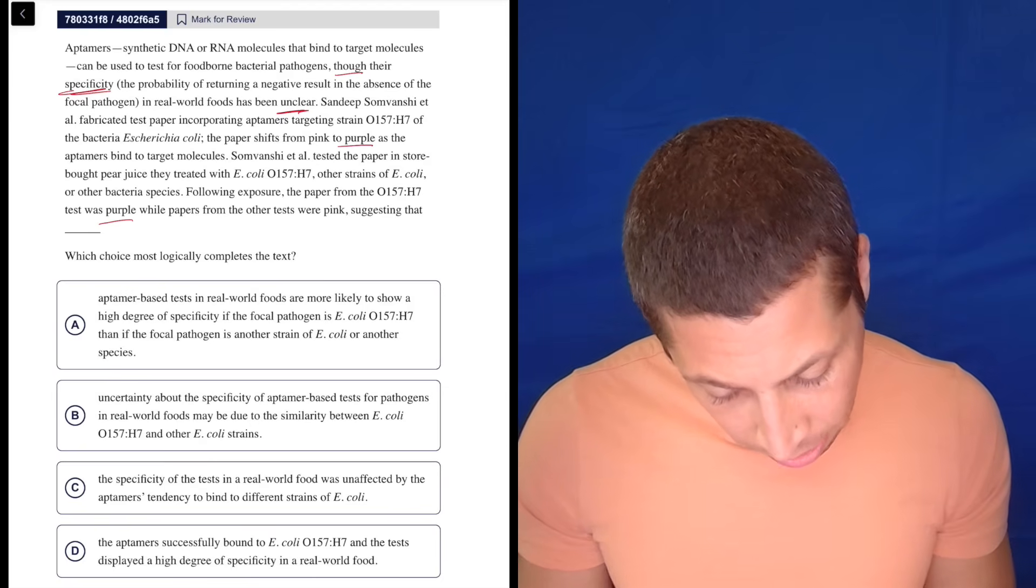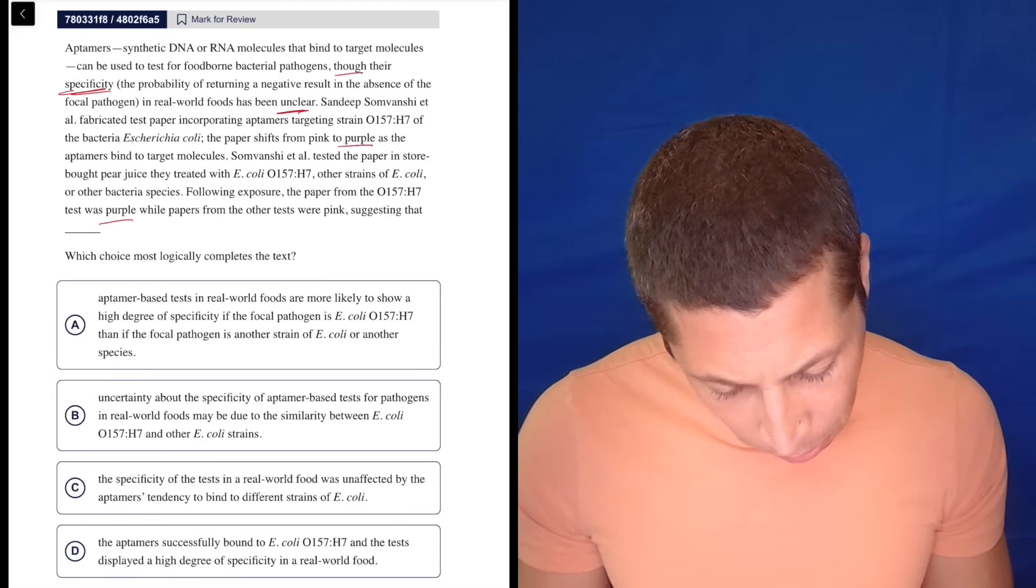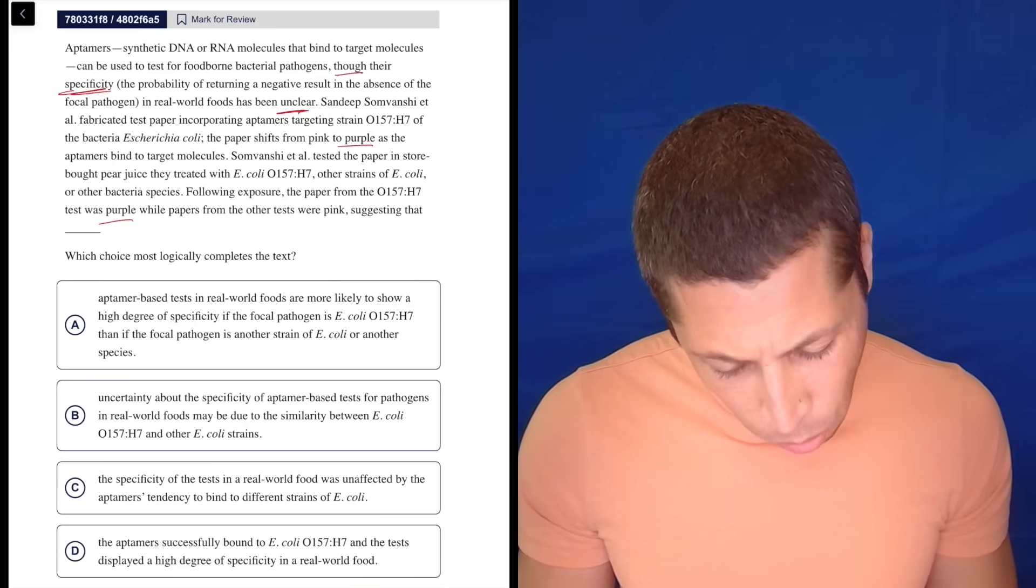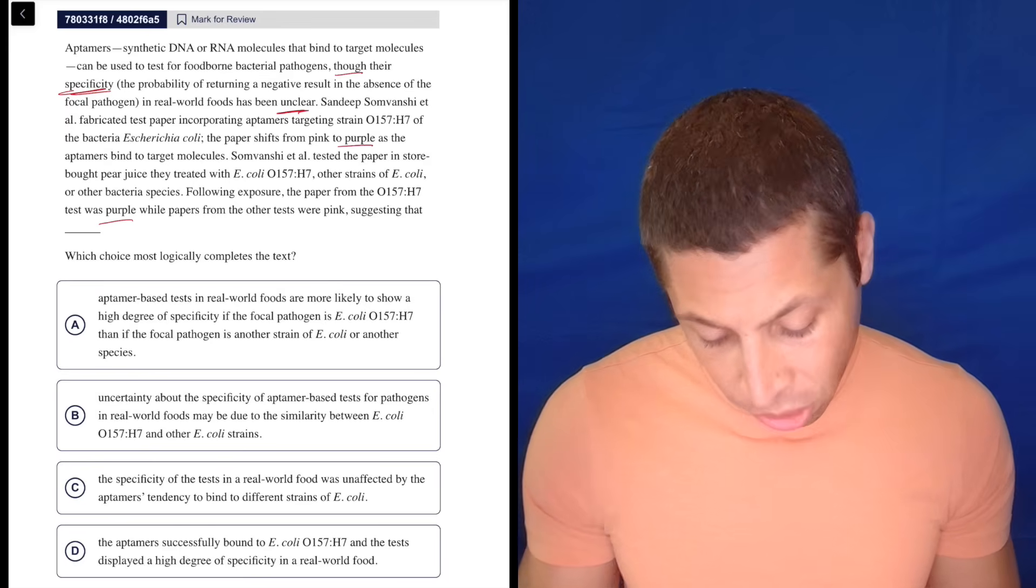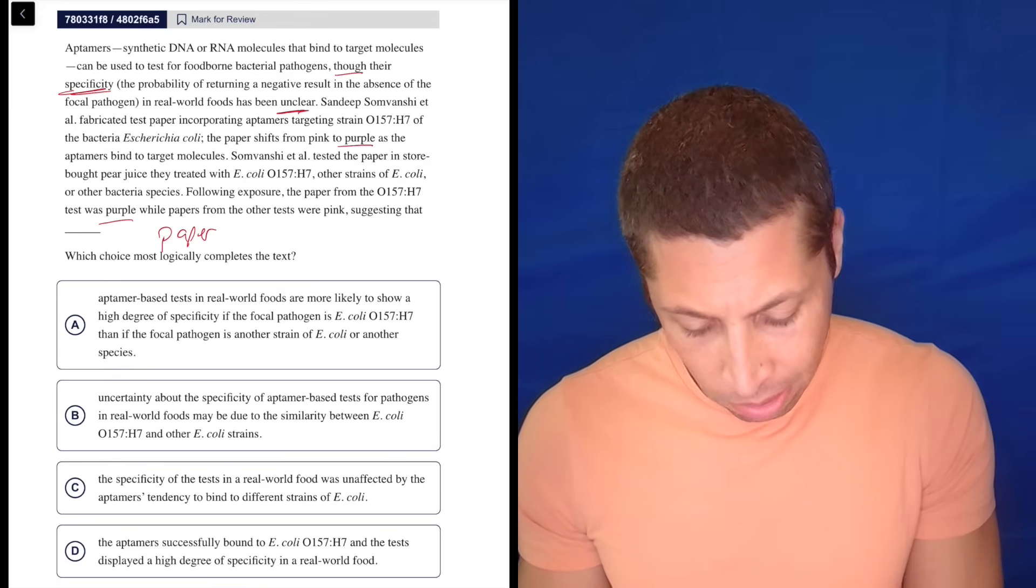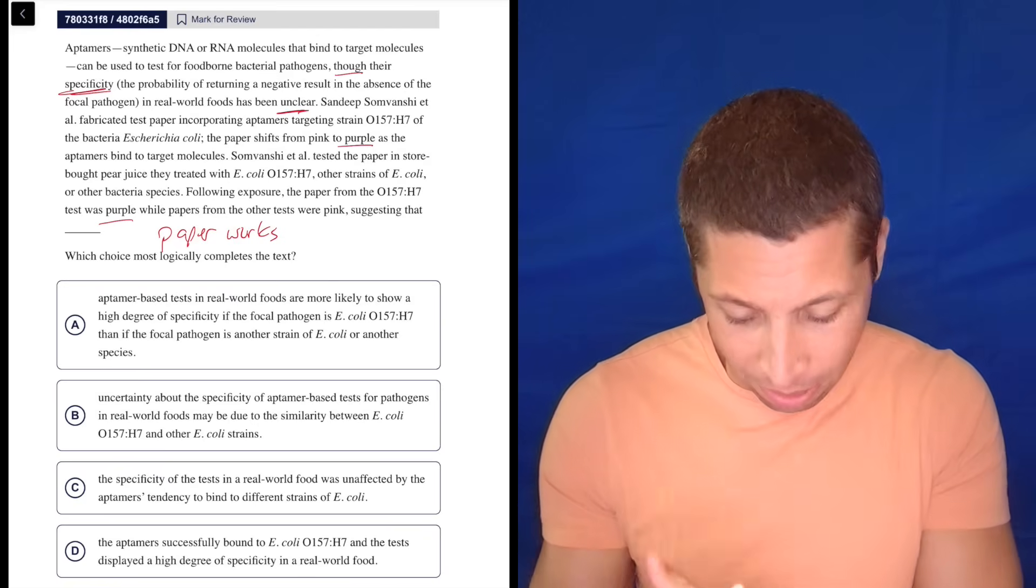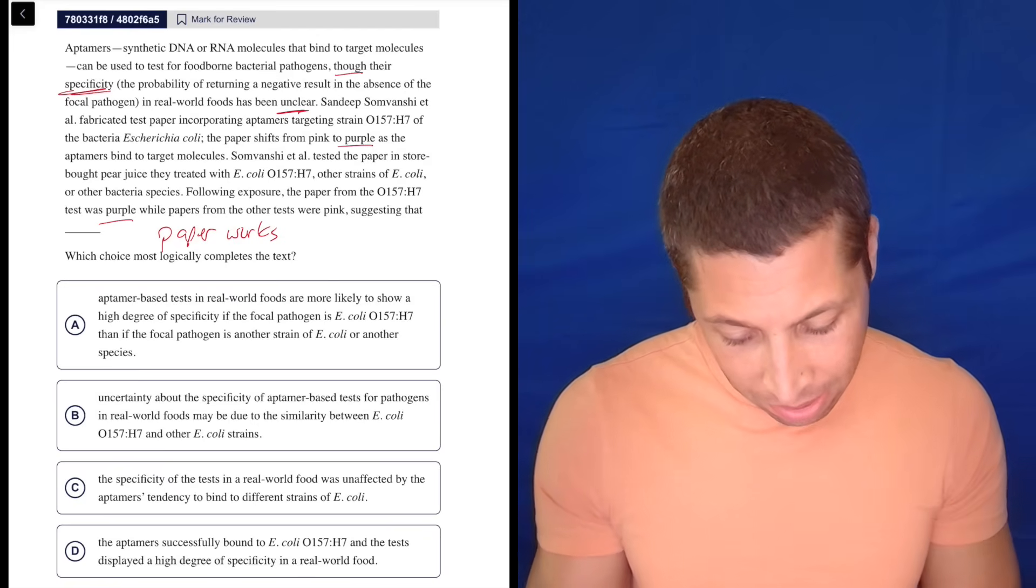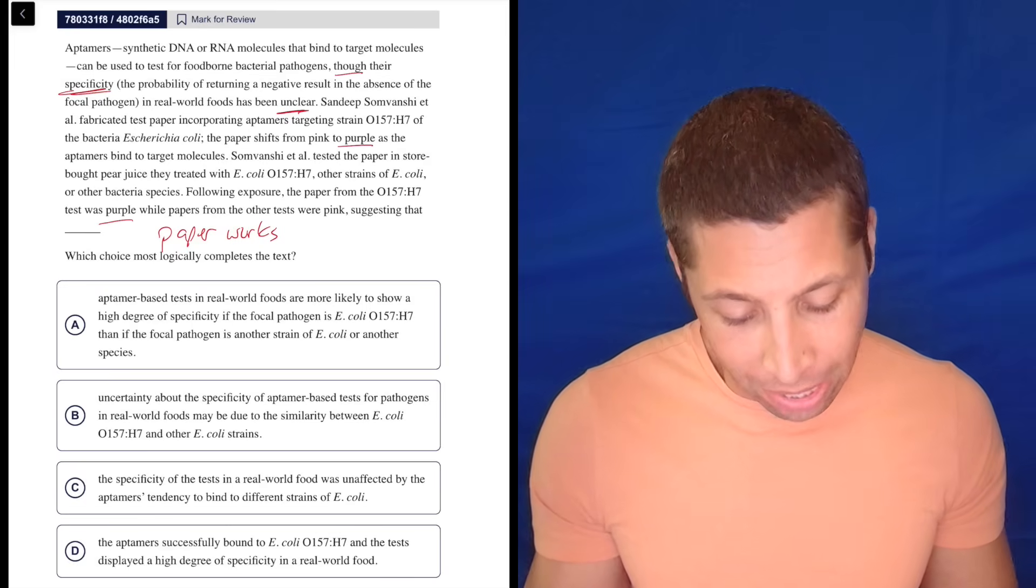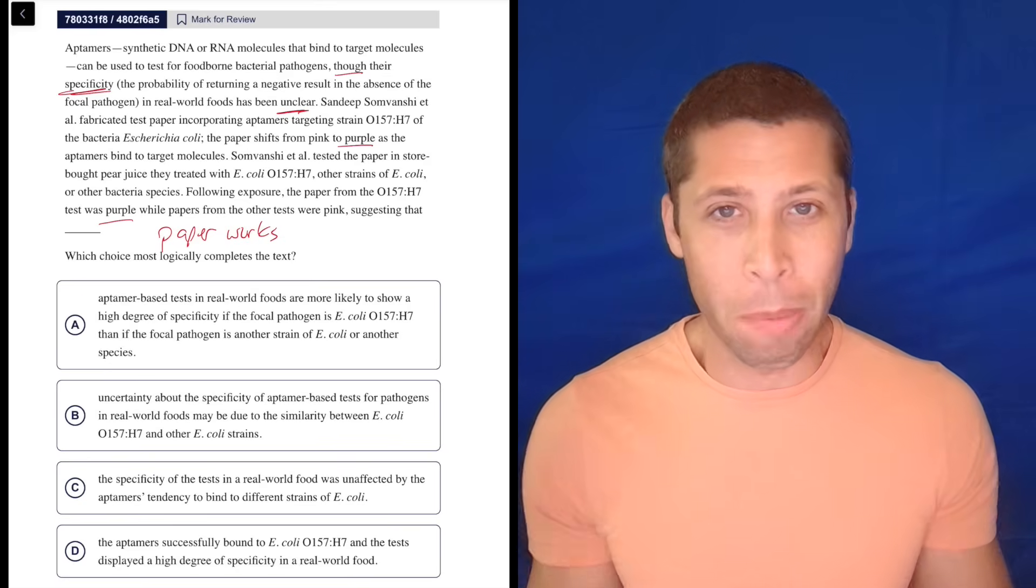Purple meant that it's there. They're targeting it. So yeah, purple is good, right? The purple was there for the one that they targeted, and not for the others. So, suggesting that I don't know, the paper works? Something like that, right? The paper worked. There was a targeted thing, and it worked. So the specificity is something to do with, I don't know, the probability of returning a negative result in the absence of the focal pathogen? Oh, my God. I don't know what that means. Let's worry about that later.